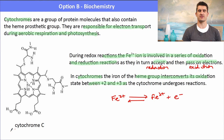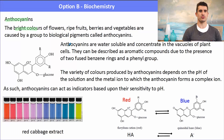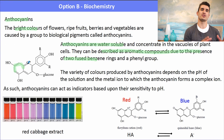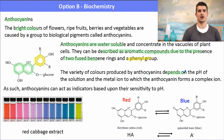Anthocyanins are responsible for the bright colours of flowers, fruits, berries and vegetables. Anthocyanins are soluble in water and described as aromatic compounds because of the presence of two fused benzene rings and a phenol group. Be careful with how you label the phenol group — the two benzene rings are fused together and the benzene functional group is the phenol group. The variety of colours produced depends upon the pH of the solution and also the metal ion to which the anthocyanin forms a complex ion.